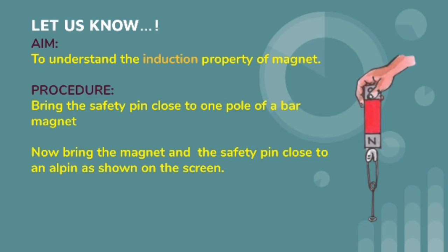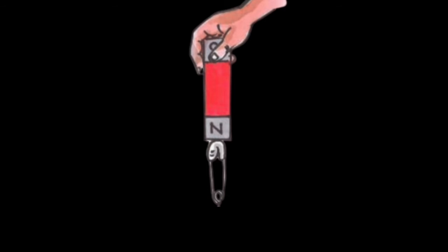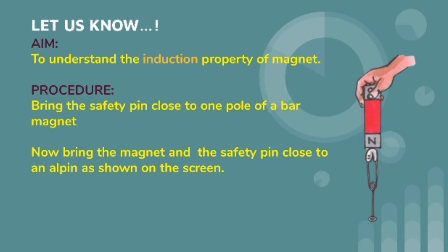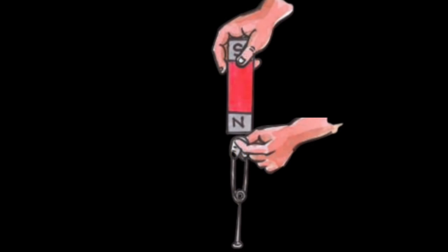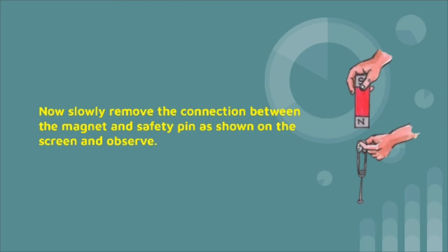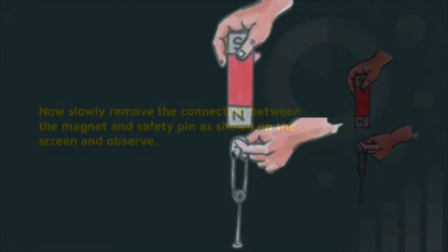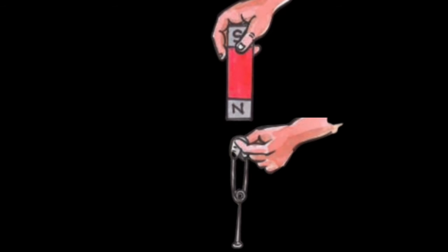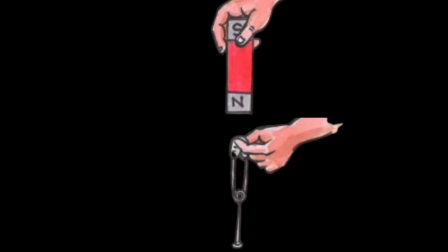The aim of this activity is to understand the induction property of a magnet. The procedure is: bring the safety pin close to one pole of the bar magnet. Now bring the magnet and the safety pin close to an all pin as shown on the screen. Then slowly remove the connection between the magnet and safety pin and observe.